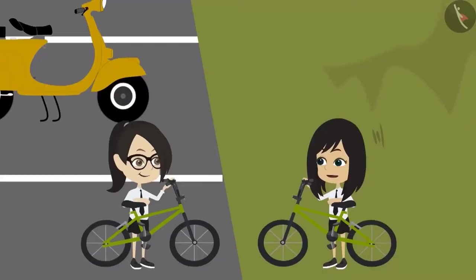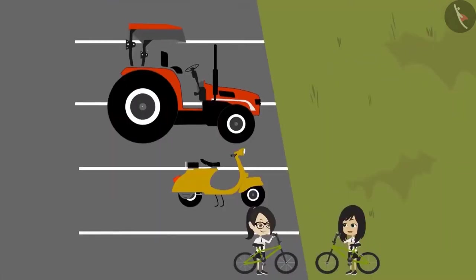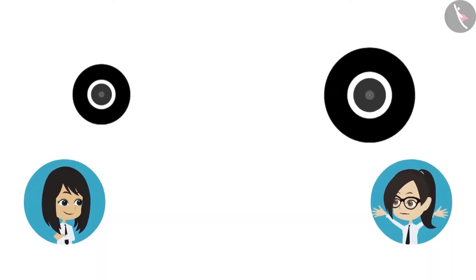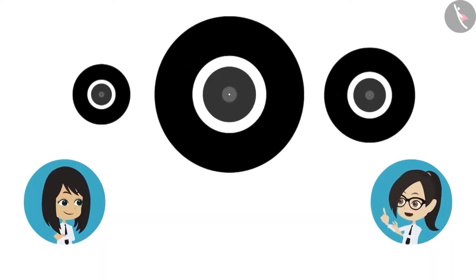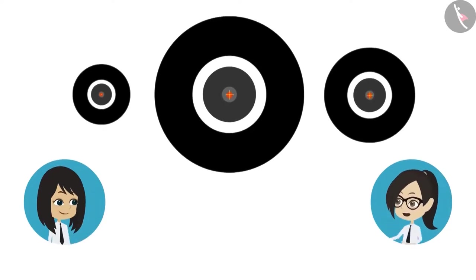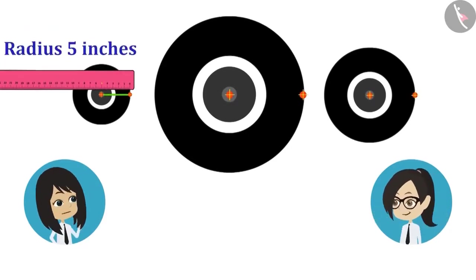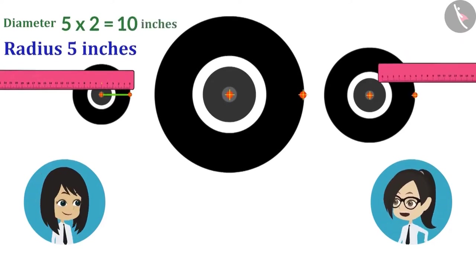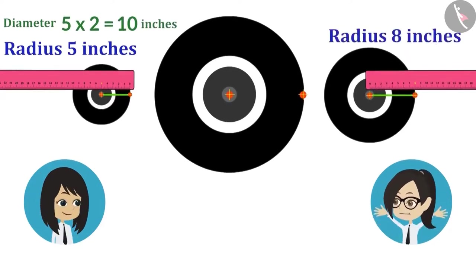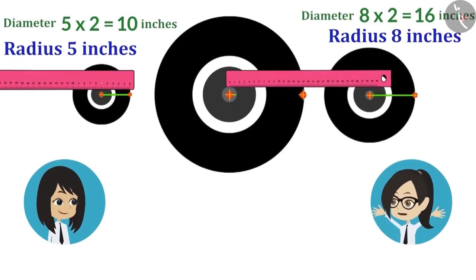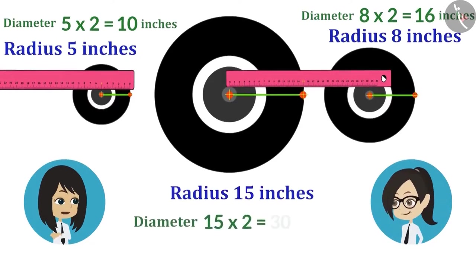Now that we have measured the wheels of the bicycle, why not measure the rest of the wheels as well? Here is the wheel of the scooter, the front wheel of the tractor, and the rear wheel of the tractor. Let's find the center for all. The radius of the wheel of the scooter is 5 inches, meaning its diameter is 10 inches. The radius of the front wheel of the tractor is 8 inches, meaning its diameter is 16 inches. The radius of the rear wheel of the tractor is 15 inches, meaning its diameter is 30 inches.